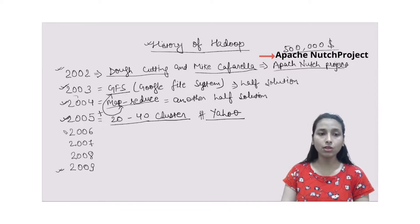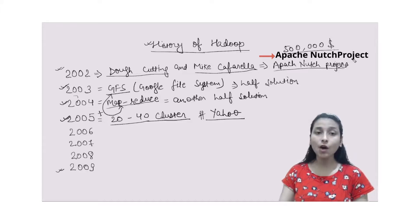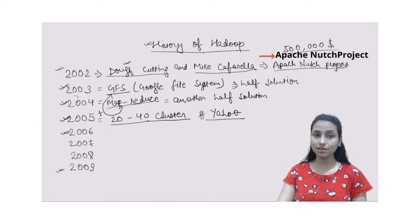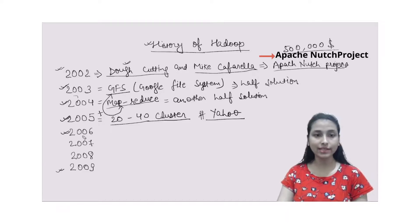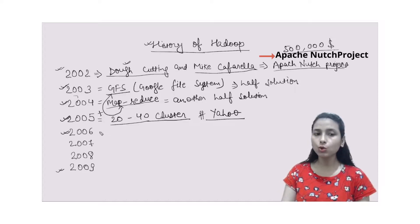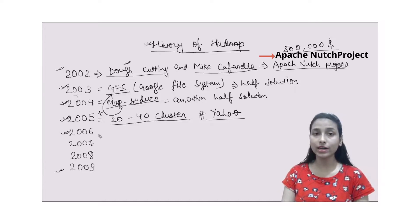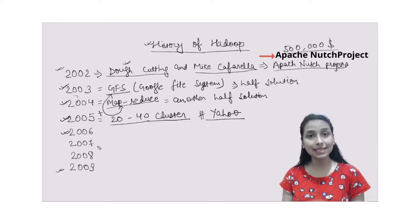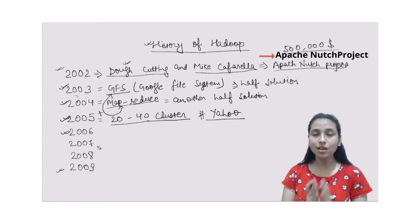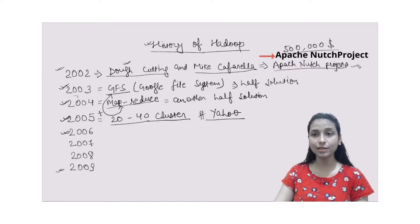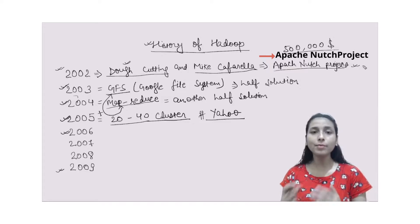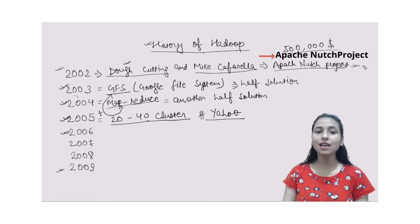Moving to the year 2006, Doug Cutting officially joined Yahoo. Through his project he wanted to provide an open source, scalable, and reliable framework to the world. So what he did was separate the distributed part from the Apache Nutch Project and form another project.